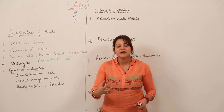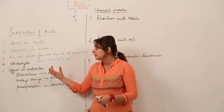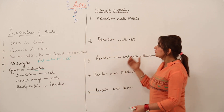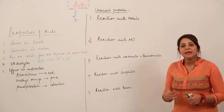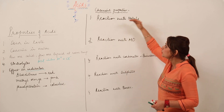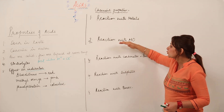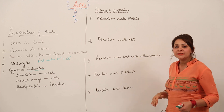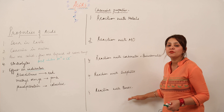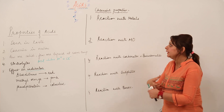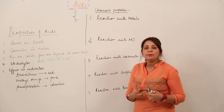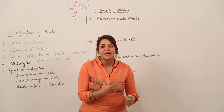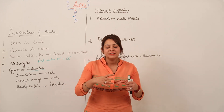Now coming to the chemical properties, we'll be starting with the many chemical reactions of acids: reaction of acids with metals, reaction with metal oxides, reaction with carbonates and bicarbonates, reaction with sulfides, and reaction with bases.